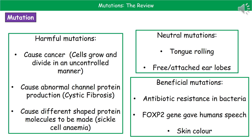The last harmful mutation example is sickle cell anemia, where your red blood cells actually have a different shape — shaped like a sickle, kind of like a crescent moon. That's all down to the different protein being made in those red blood cells.